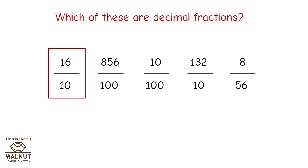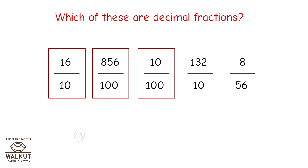This denominator is 10, so it is a decimal fraction. Denominator 100 is a decimal fraction. Denominator 100 is a decimal fraction. Denominator 10 is a decimal fraction. Denominator 56 is not a decimal fraction.